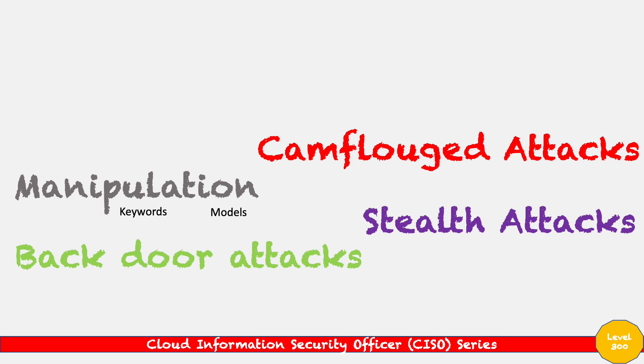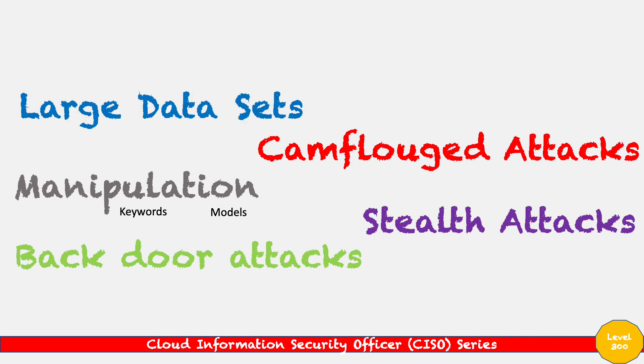Backdoor attacks are another method — when large language models are built, they can have a backdoor, and that's another way we can poison them. Large language models all depend on datasets; that's how we train them. When we're importing large datasets into the models, we can actually change, manipulate, and alter the data so those models are technically poisoned. If we poison the data itself, we're taking a preemptive step towards poisoning the large language models.